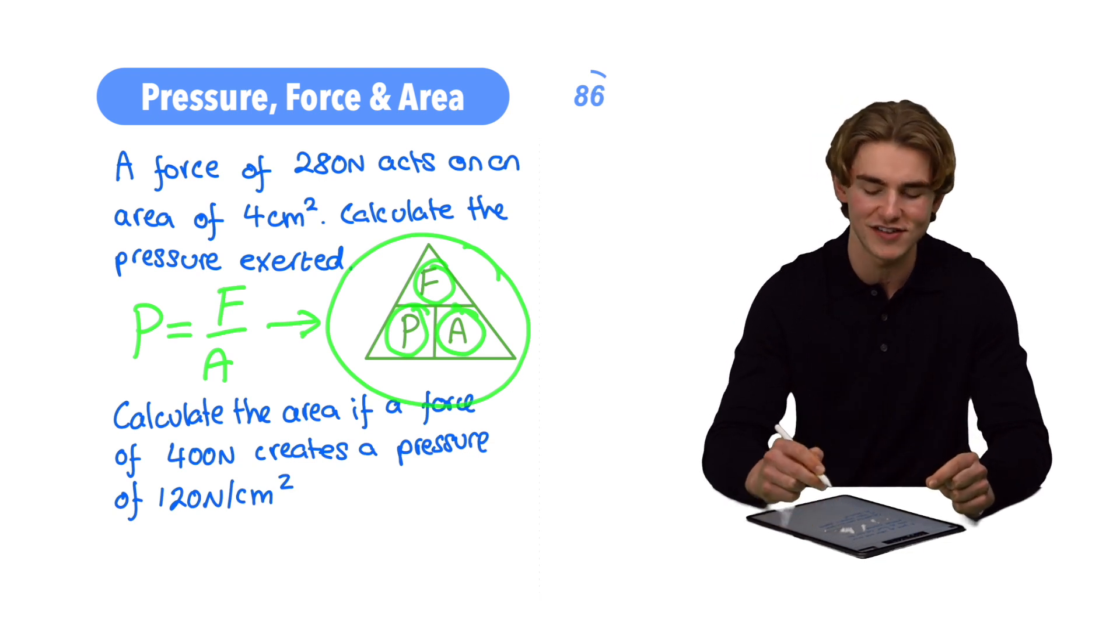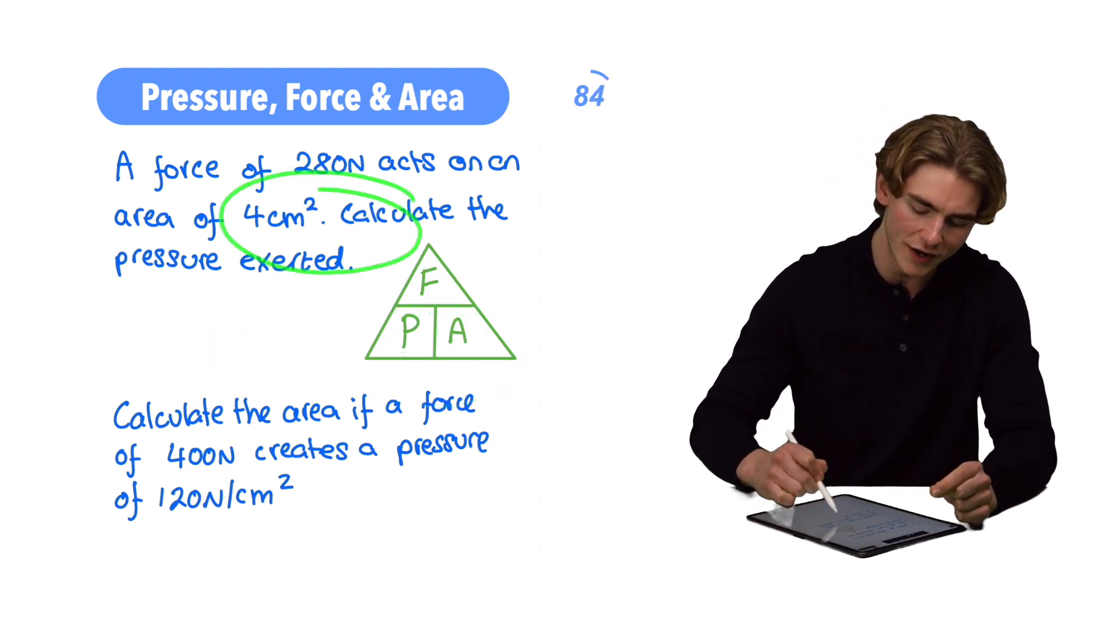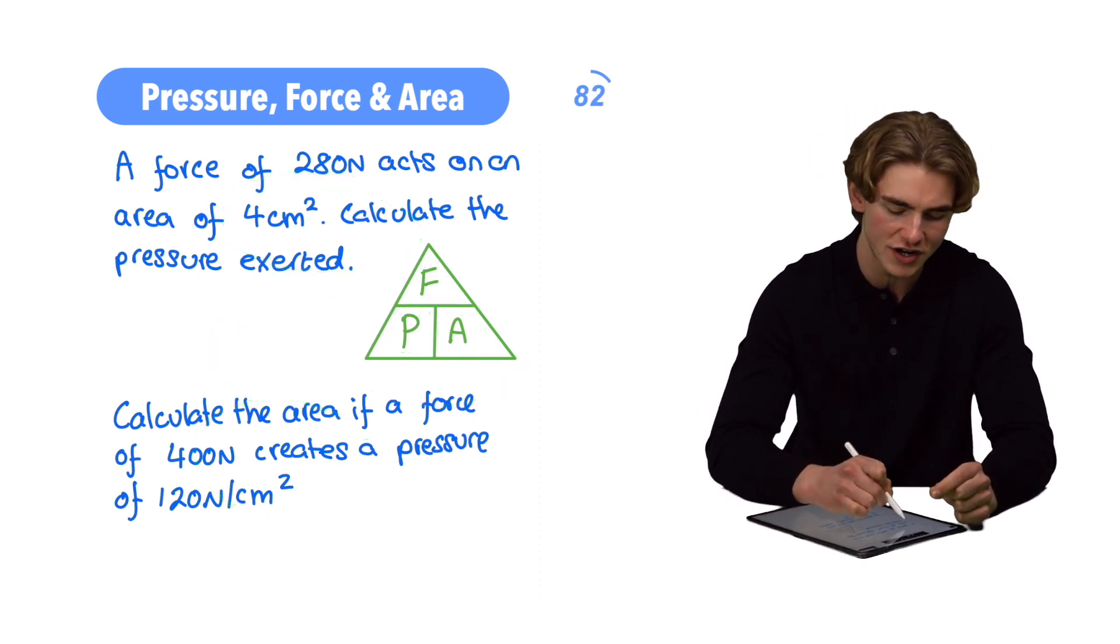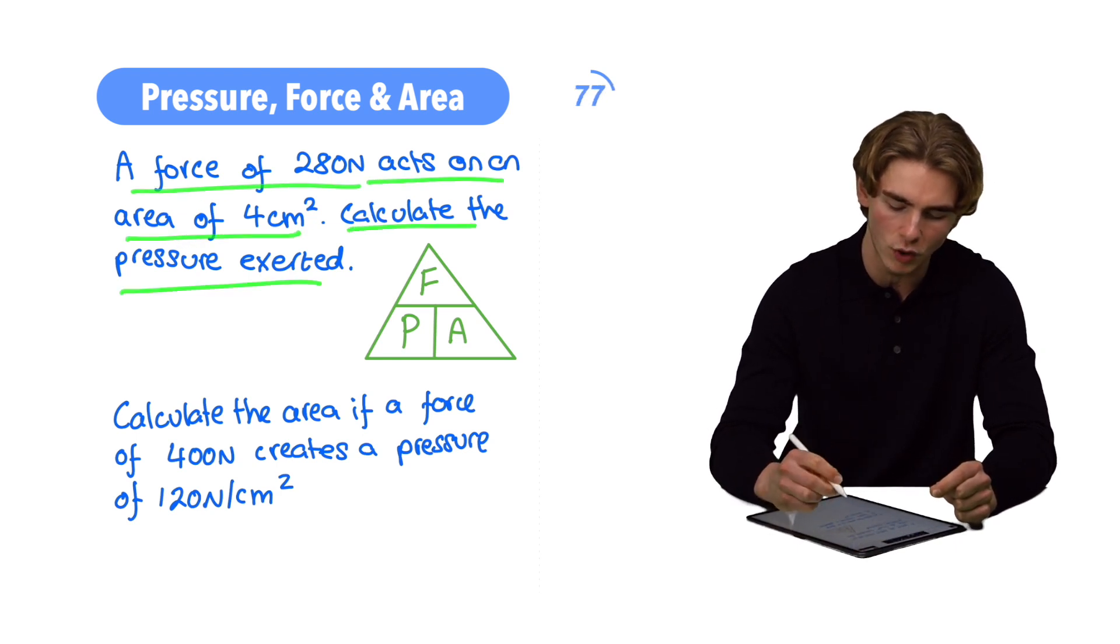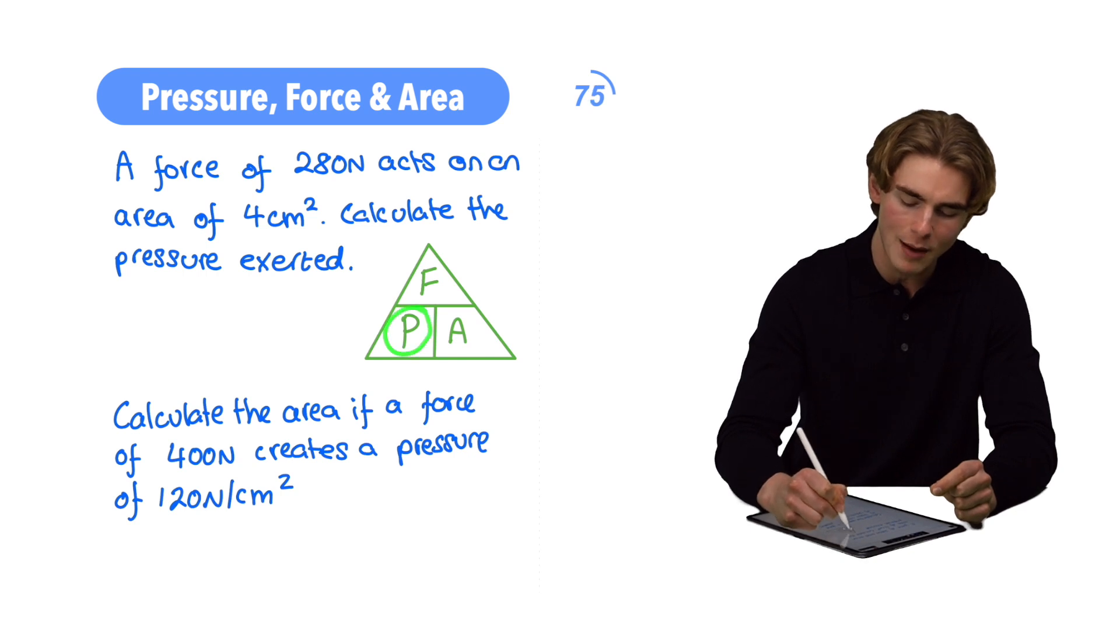Let's have a look at how to apply this to these two questions. First off, a force of 280 Newtons acts on an area of 4 centimeters squared. Calculate the pressure exerted. We're going to have pressure in the bottom left, and pressure is equal to force divided by area.